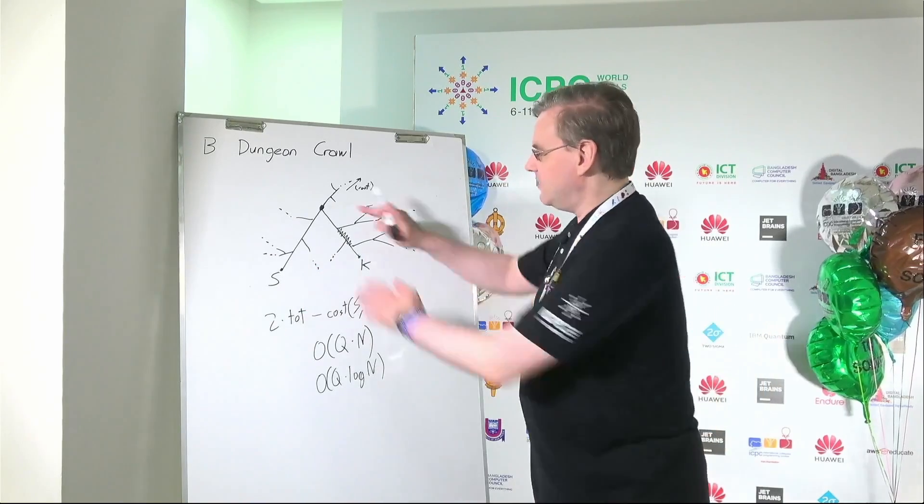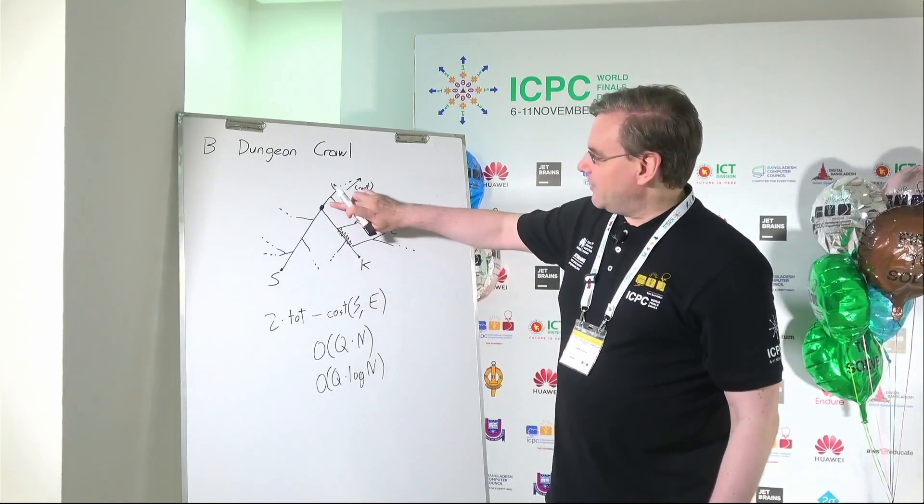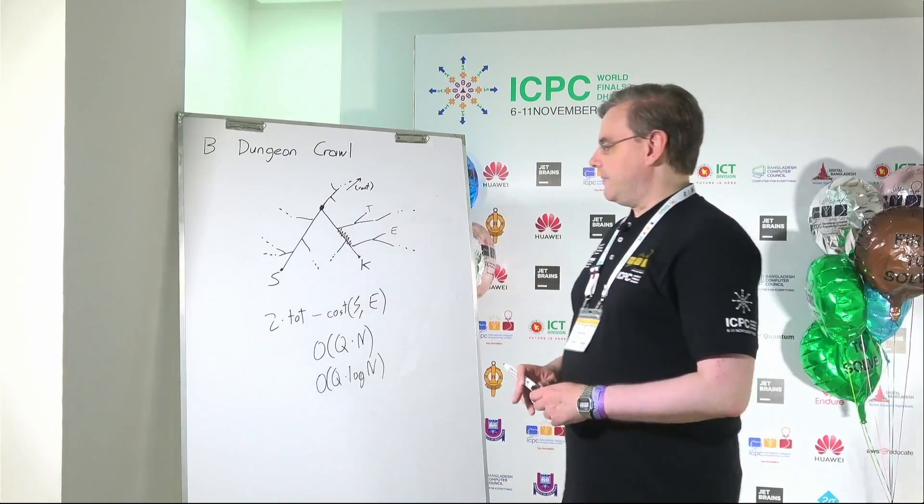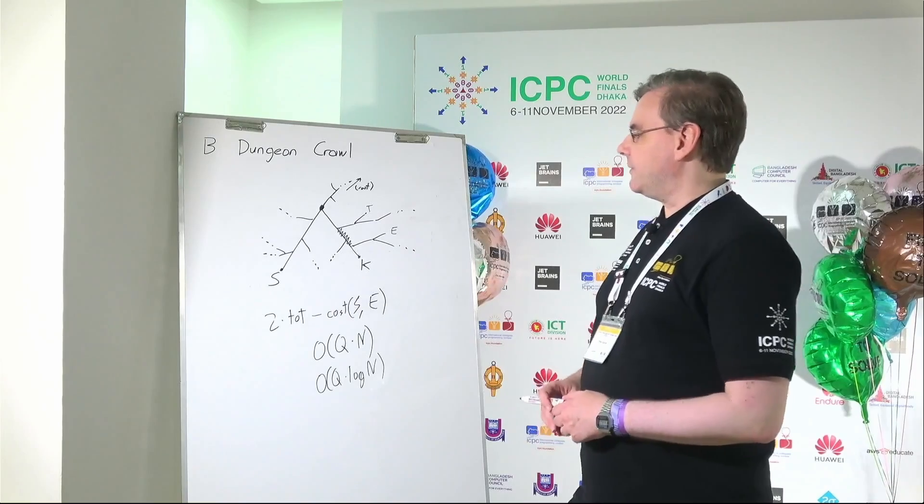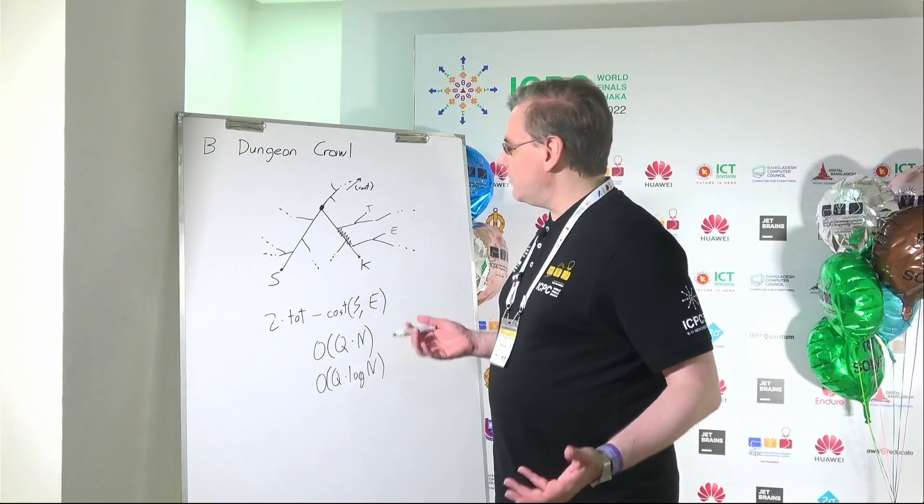For instance, if you have S and K, you would immediately know what the common ancestor of the two is. There are actually several different approaches that end up with log n. One you might do, for instance, is you can store hops of various lengths.